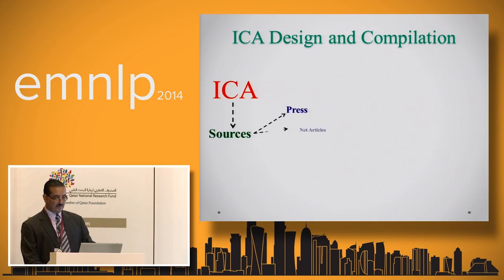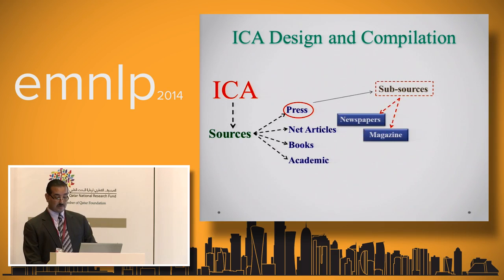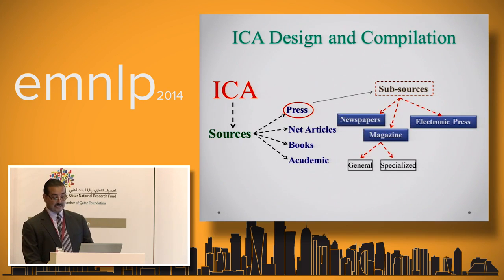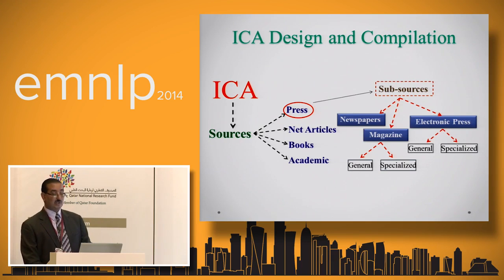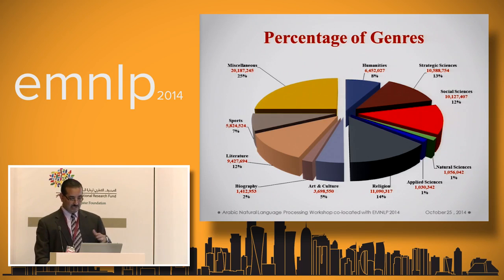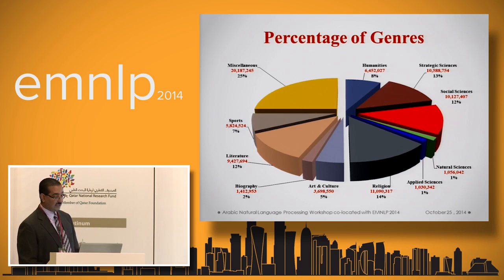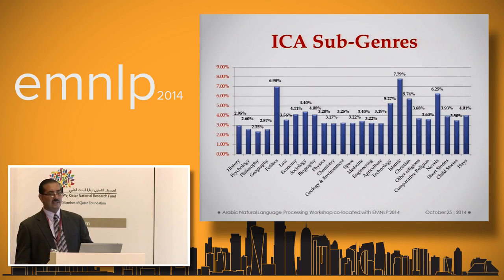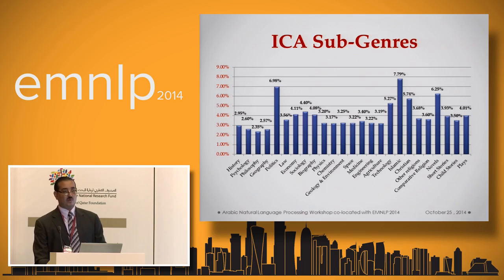For the sources, we have the press, net articles, books, and academia. From the press, these are sub-classified to include newspapers, magazines, electronic press, and from the magazines we have general magazines and specialized magazines, and electronic press as well. We try to make the coverage as good as possible. There's a percentage breakdown of coverage concerning genres — humanities, strategic sciences, and every field — and we try to make the sub-genres as balanced as possible.